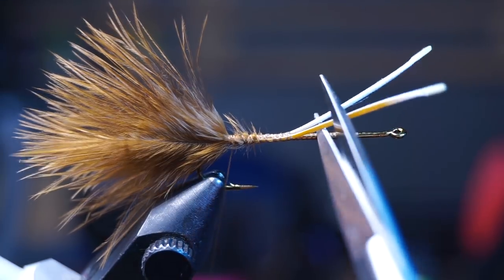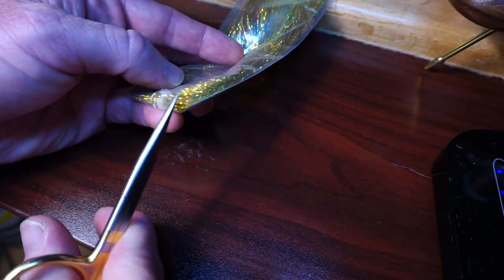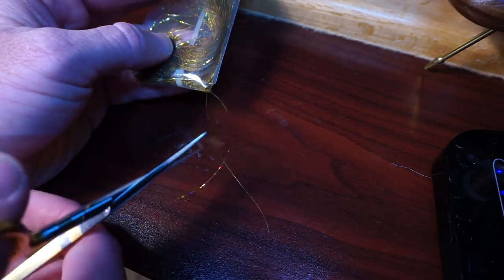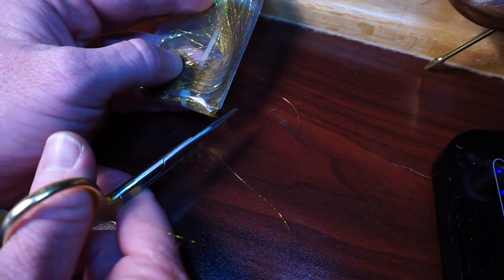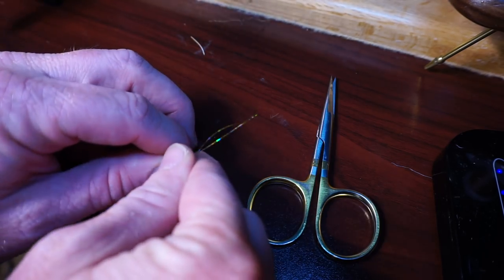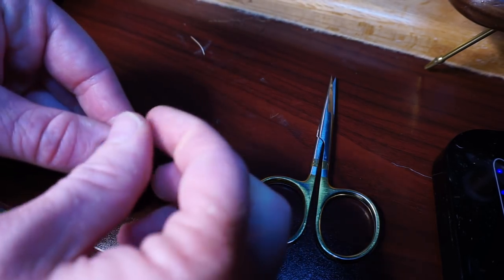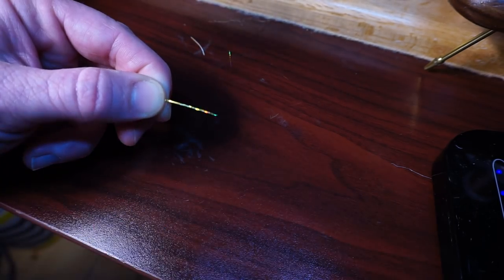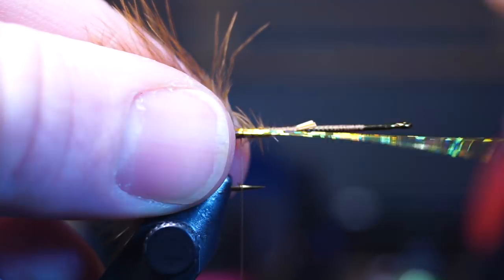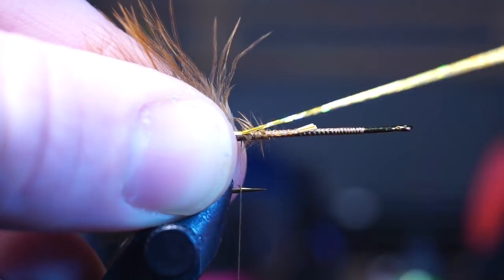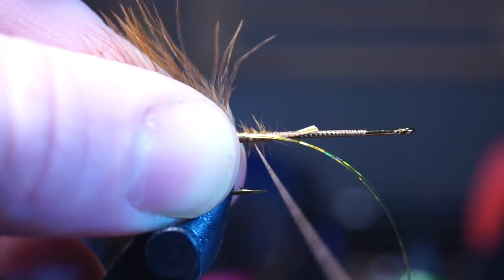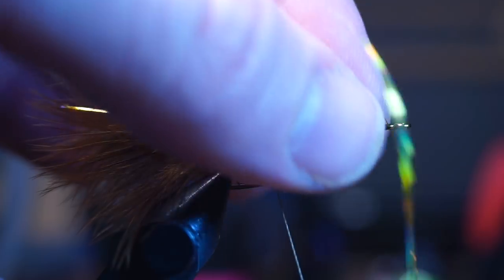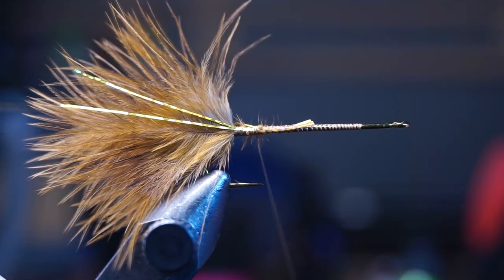Bring your thread back to the base of the tail and clip off the waste of the feather. Not necessary, but I like adding two strands of flashabou at this point for a little flash in the tail. This is gold holographic flashabou, but any flashabou or crystal flash will work. Tie them in so they extend out about the length of the tail, or slightly shorter, then tie them in on the other side of the tail as well.